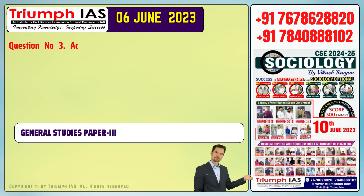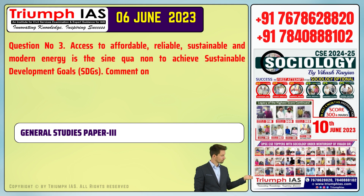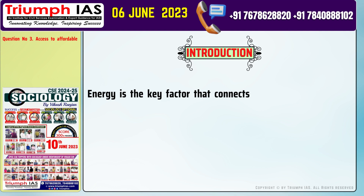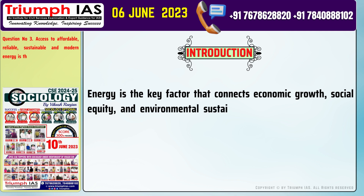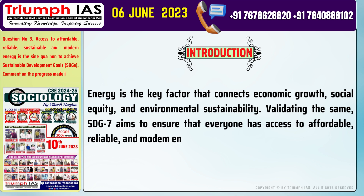Question number 3: Access to affordable, reliable, sustainable, and modern energy is a sine qua non to achieve Sustainable Development Goals (SDGs). Comment on the progress made in India in this regard. Introduction: Energy is the key factor that connects economic growth, social equity, and environmental sustainability. Validating the same, SDG 7 aims to ensure that everyone has access to affordable, reliable, and modern energy services by the year 2030.